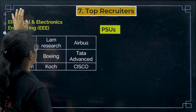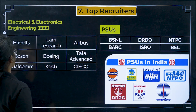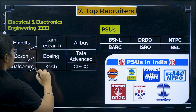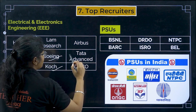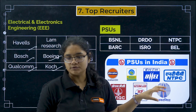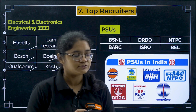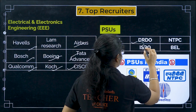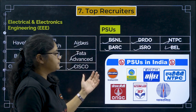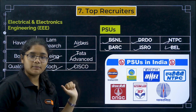Next, the top recruiters for EEE include Havells, Bosch, Qualcomm, Boeing, Coats, Airbus, Tata, Adani, and Cisco. There are also many government options — if you qualify the GATE examination, you can get into PSUs like BSNL, BARC, DRDO, ISRO, NTPC, and BEL.